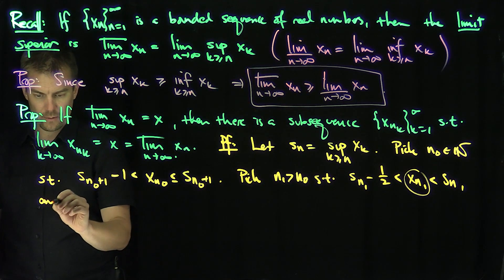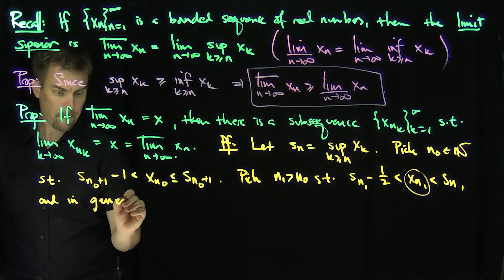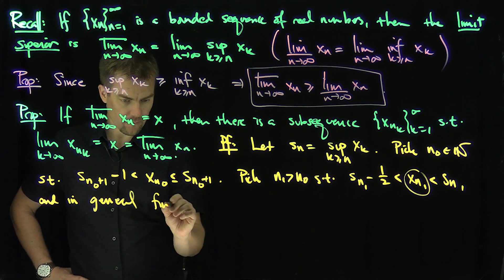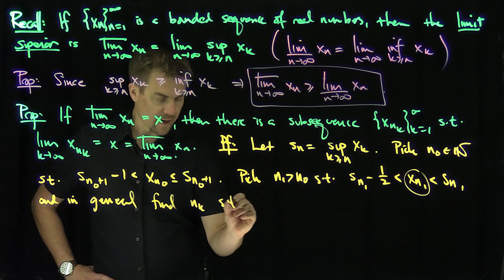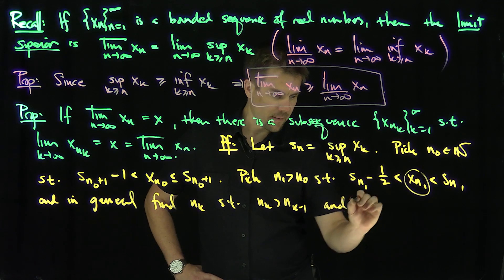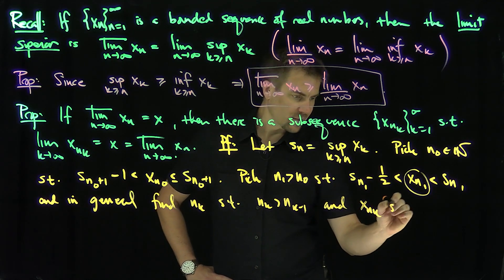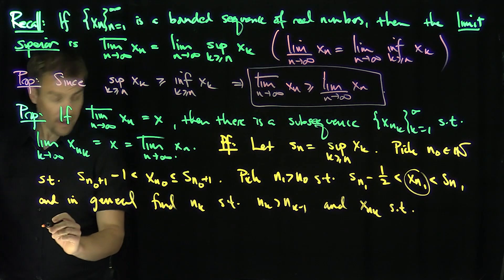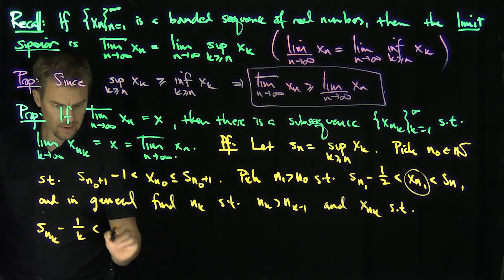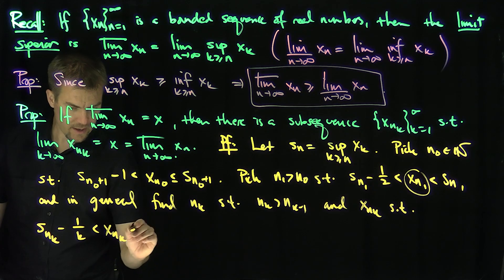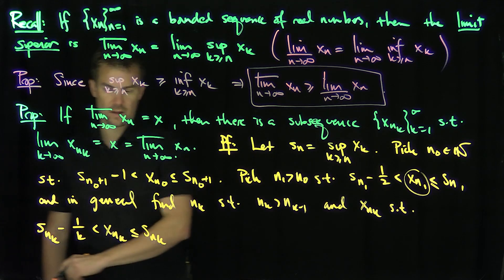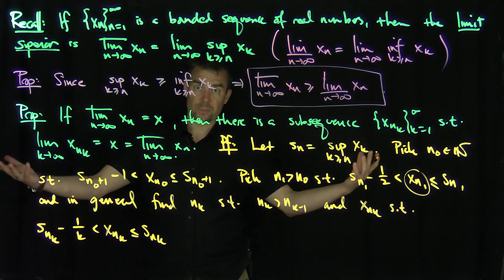In general, find n_k such that n_k is strictly greater than n_{k-1}, and x_{n_k} satisfies the following inequality: s_{n_k} minus 1/k is less than x_{n_k}, which is less than or equal to s_{n_k}. That is always possible again by supremum approximation. And now I have a subsequence.